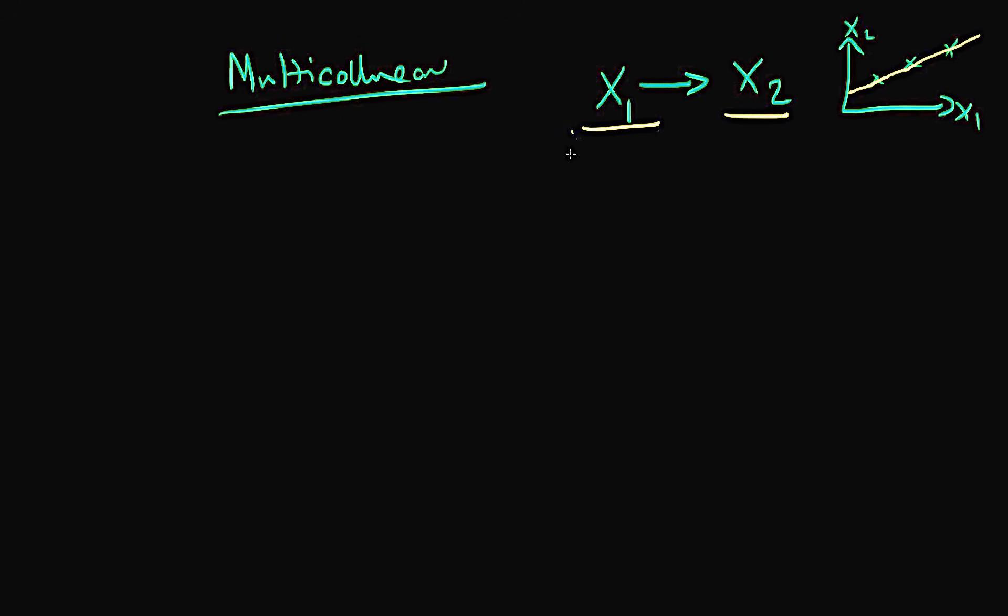That's the example of perfect collinearity. Here I'm talking about what happens if X1 and X2 are highly correlated with one another, and we think that both of them are important in influencing a dependent variable. So here we've got some positive correlation between X1 and X2.